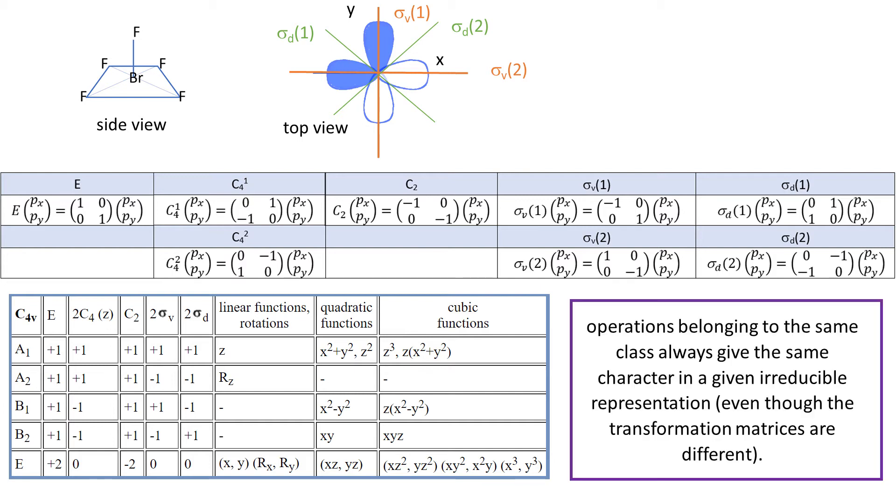So the matrices look like that and indeed we are able to reconstruct the E irreducible representation. Notice that all the matrices for symmetry operations that belong to the same class have the same character. That is always true. Therefore, often I will only show you one example matrix for each class.